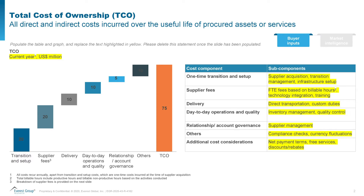In terms of the data, it actually resides within the buyer organization. However, the challenge is that most buyers do not track and allocate costs in a manner which can give them a TCO view for every spend category. With a slightly more structured approach, these costs can be tracked. However, if an organization does not have a way to identify these costs, there are external benchmarks available that can be used to understand the TCO view.